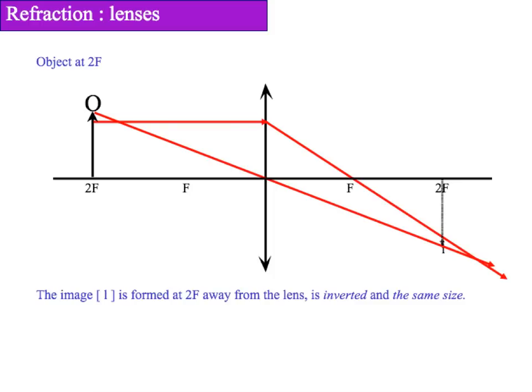First, if the object is at 2f, this means it is twice the focal length of the lens away from the lens. Then we will draw in our parallel line and then refract through f as well as our straight line through the centre of the axis.